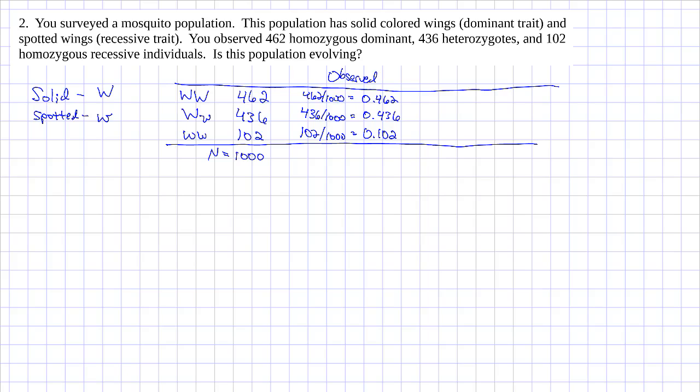Now we need to calculate our predicted frequencies. But before we do that, we have to calculate our allele frequencies. So we'll start with our dominant allele frequency. This is p. We take 2 times the number of individuals that are homozygous dominant, plus the number of individuals that are heterozygote, divided by 2 times our population size. I get 1360 divided by 2000, which is equal to an allele frequency of 0.68.